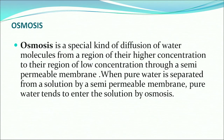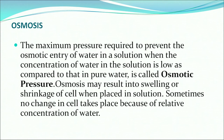Osmosis is different from diffusion because it needs a membrane. Osmosis is a special kind of diffusion of water molecules from a region of higher concentration to a region of lower concentration through a semi-permeable membrane. When pure water is separated from a solution by a semi-permeable membrane, pure water tends to enter the solution by osmosis. The maximum pressure required to prevent the osmotic entry of water into a solution where the concentration of water is low compared to pure water is called osmotic pressure.